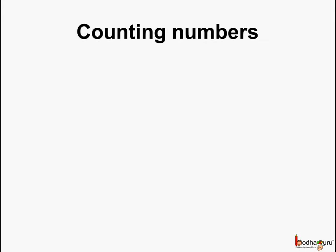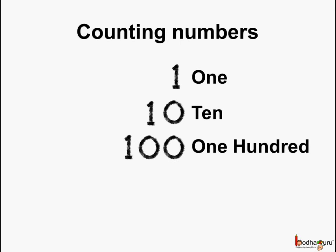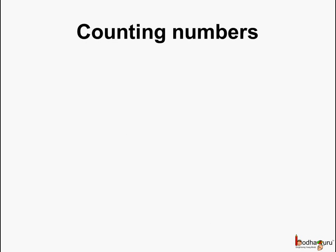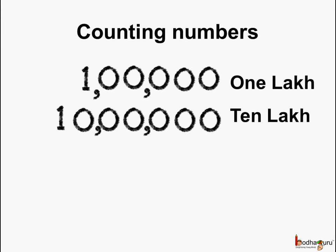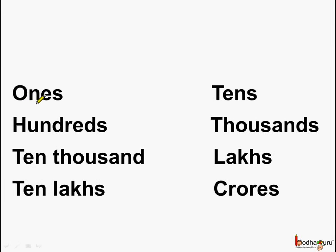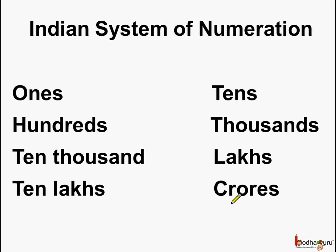We can count very large numbers starting from one, ten, one hundred, one thousand, ten thousand, one lakh, ten lakh, one crore and ten crores. So when we are counting by ones, tens, hundreds, thousands, ten thousands, lakhs, ten lakhs, crores — we are using the Indian system of numeration. Here we make use of hundreds, thousands, lakhs, crores, etc.